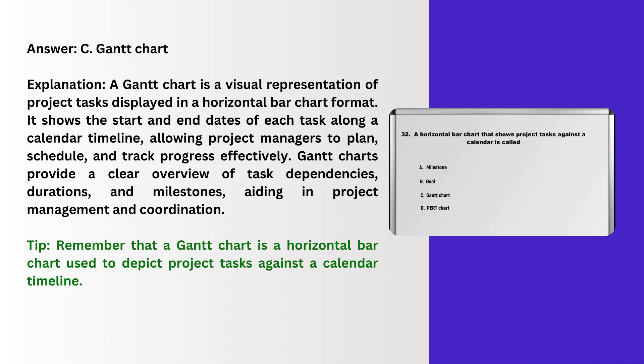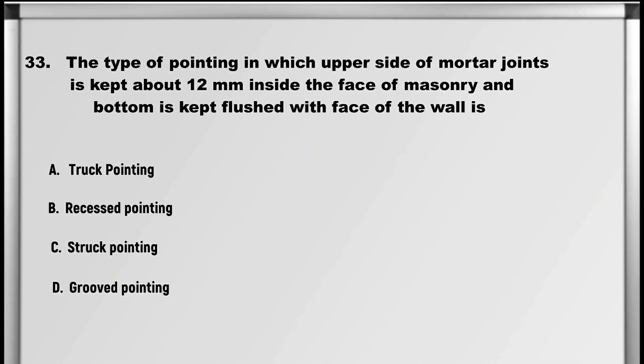Explanation: A Gantt chart is a visual representation of project tasks displayed in a horizontal bar chart format. It shows the start and end dates of each task along a calendar timeline, allowing project managers to plan, schedule, and track progress effectively. Gantt charts provide a clear overview of task dependencies, durations, and milestones, aiding in project management and coordination. Tip: a Gantt chart is a horizontal bar chart used to depict project tasks against a calendar timeline.